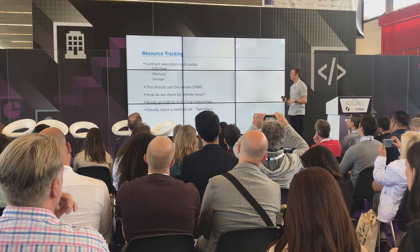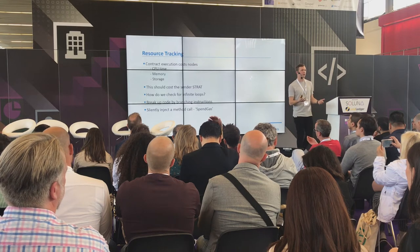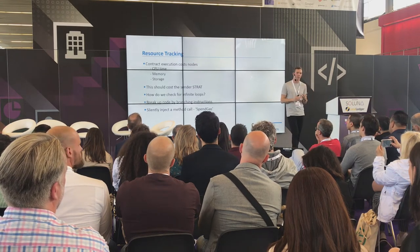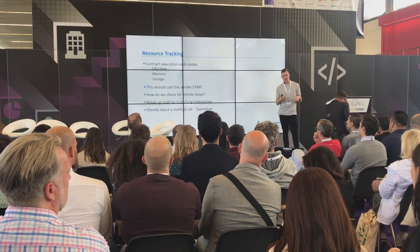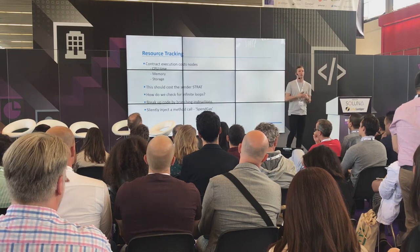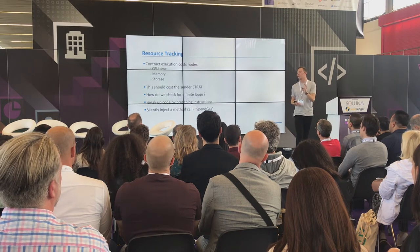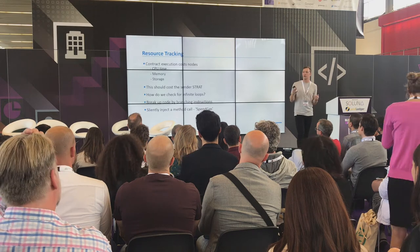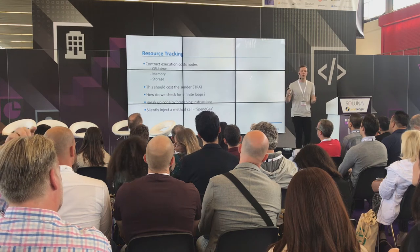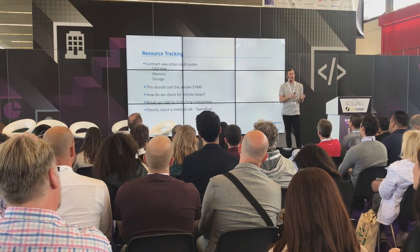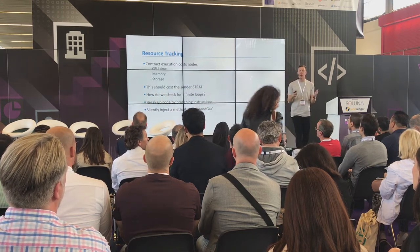The other hard problem is resource tracking. Contract execution actually costs something — if your node is executing a contract, it costs memory, storage, and CPU. You need to receive some value for that. There's also a related problem: the infinite loop. If a contract gets into an infinite loop, it's going to run forever and the node will never catch up with the rest of the network. We need some way to tally how many resources have been used and ultimately stop execution if we get past a certain amount of gas.